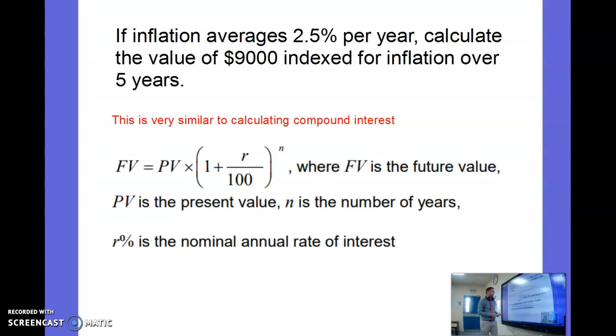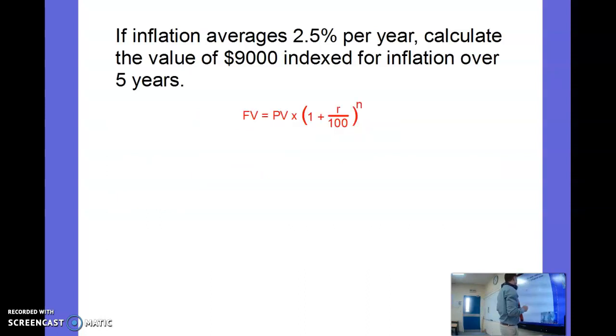If we consider the compound interest formula, this is a basic compound interest formula where we are doing the interest each year. We can steal from that formula for inflation. Here we've got FV = PV × (1 + r/100)^n, where FV is the future value, PV is the present value, n is the number of years, and r is our rate.